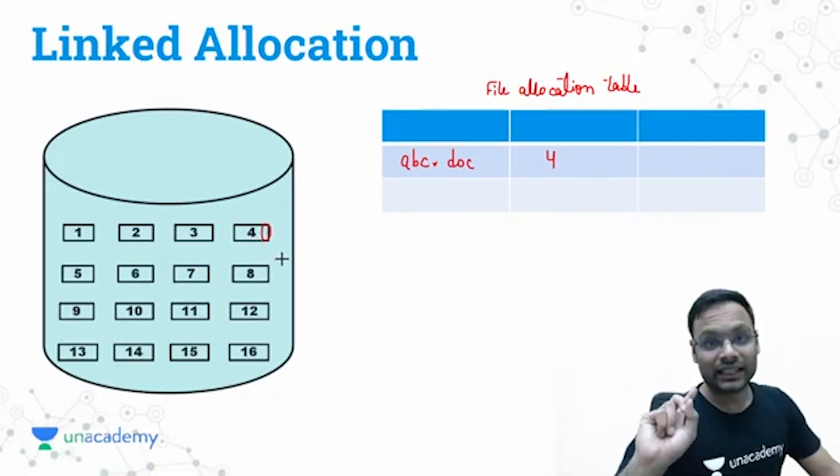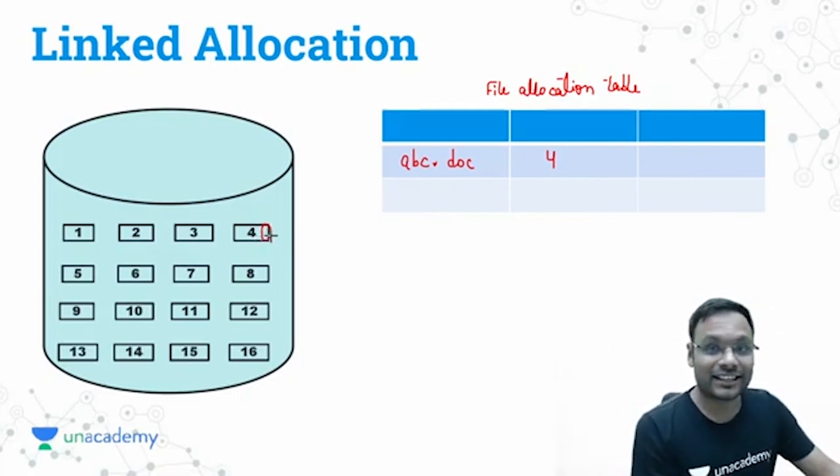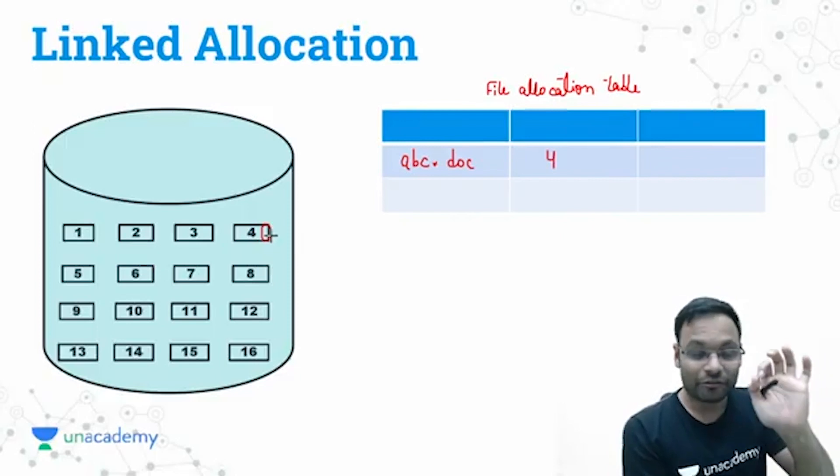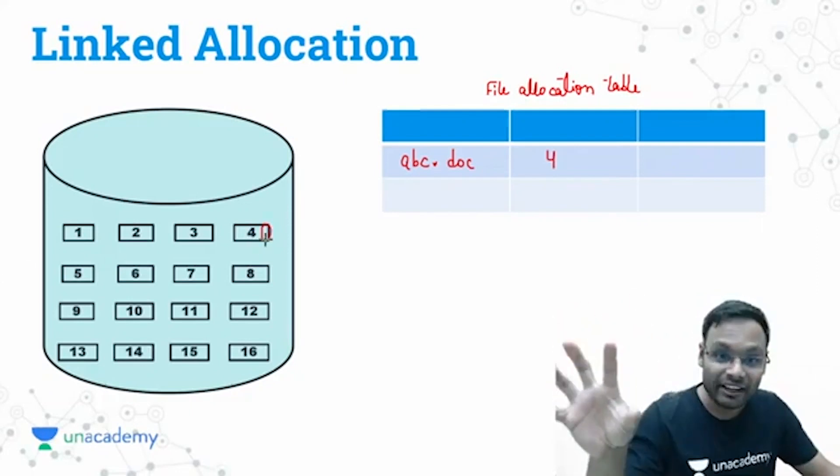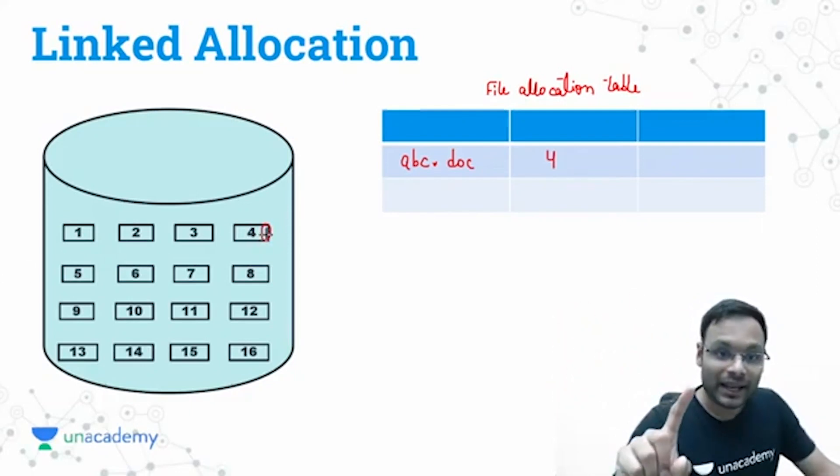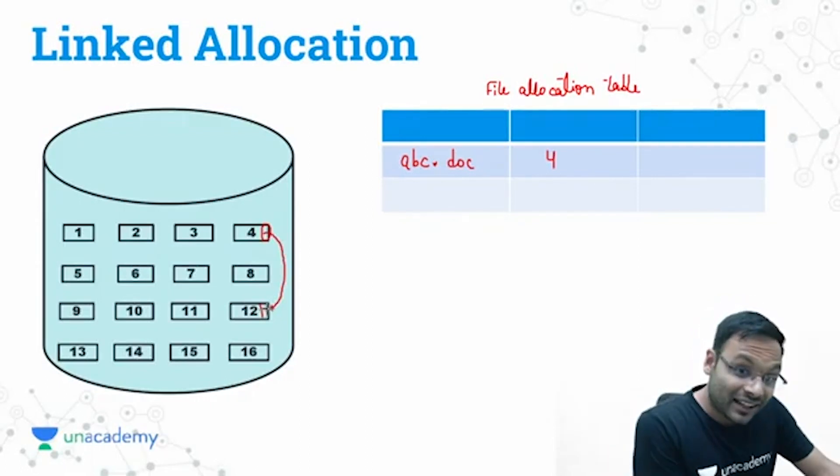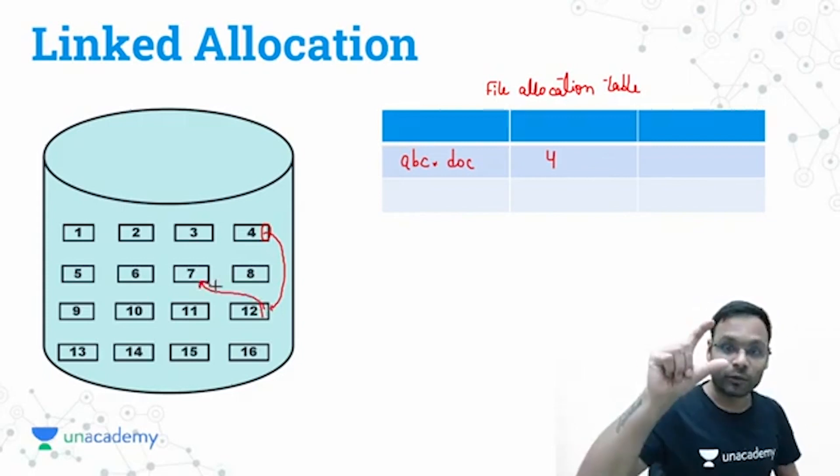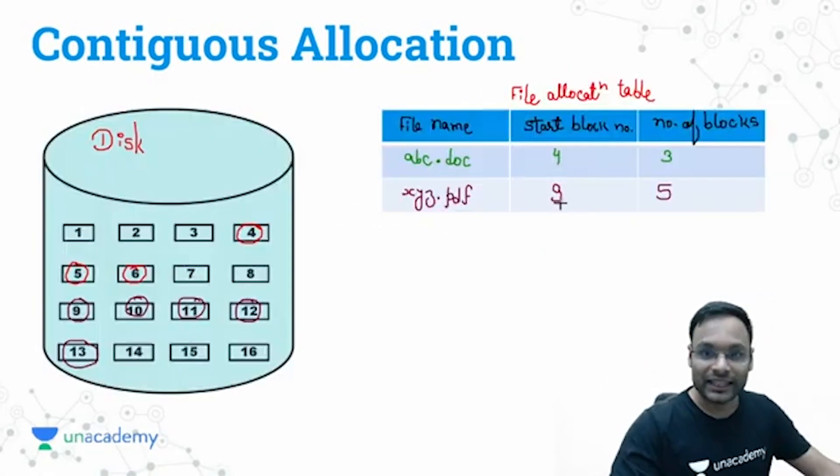For almost the complete block we will keep the file content. In the last few bytes we will contain a link, link means the block number of next block which is containing the second block. Necessarily we are not storing the second block of file second part of file on the fifth block, we can store it anywhere. And that anywhere block number I can keep here. So let's say I am keeping the next block in block number 12, and block number 12 also will keep another link to next file. Let's say next particular block is seven. Part one is stored on block number four, part two is stored on block number 12, and part three of the file is stored on seventh block.